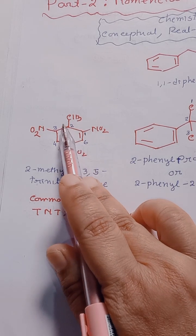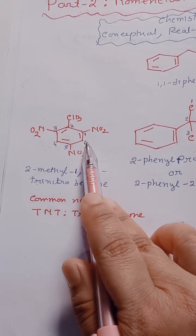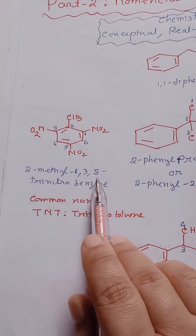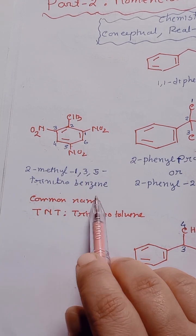So we can start from here: 1, 2, 3, 4, 5, 6. So here we can write it down: 2-methyl-1,3,5-trinitrobenzene.